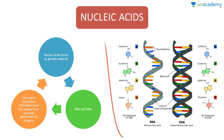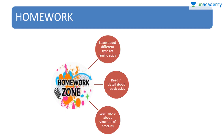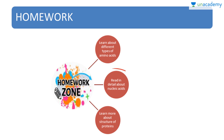The self-study for this chapter includes: learning about the different types of amino acids — there are 21 types, divided into essential and non-essential. Read in detail about nucleic acids, how they work and how genetic information is passed from one generation to another, as it is very important. Also learn more about the structure of proteins — primary, secondary and tertiary structure.